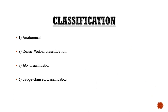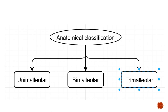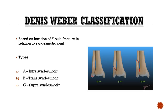Classification of ankle fractures has four types: anatomical, Dennis Weber, AO, and Lauge-Hansen. In the anatomical classification, fractures are classified as unimallular (one malleolus), bimallular (two malleoli), or trimallular (three malleoli).